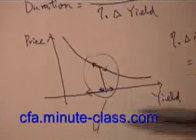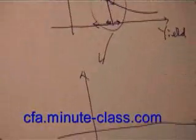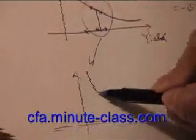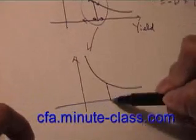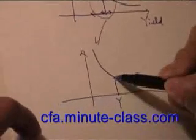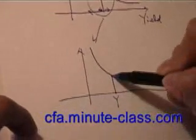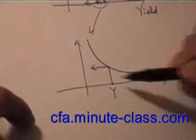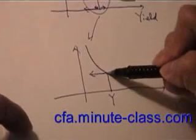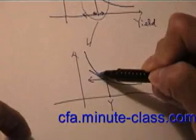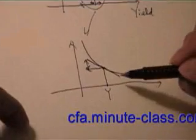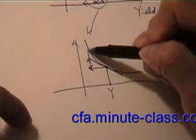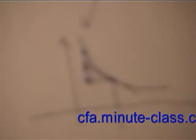If we try to magnify this part, you will see that there is a big curvature for any bond. And for a particular yield, if there is a big change in the yield, let's say this amount of change, you will find that by using duration alone, it will only account for a small portion of the change of the price, while there is another portion which is not accounted for by the duration.